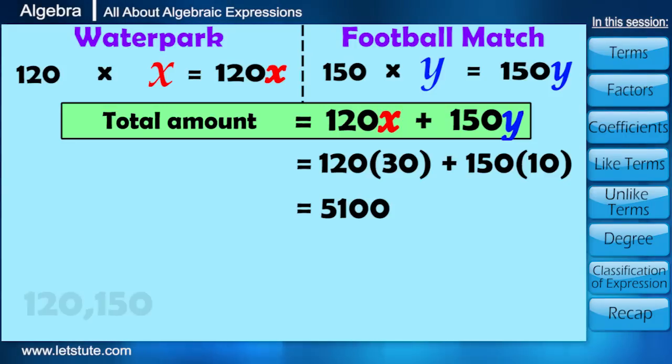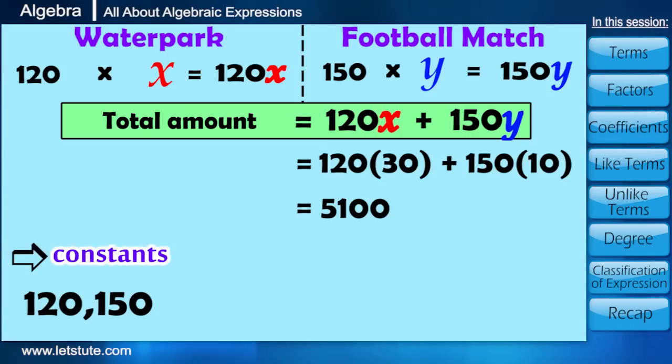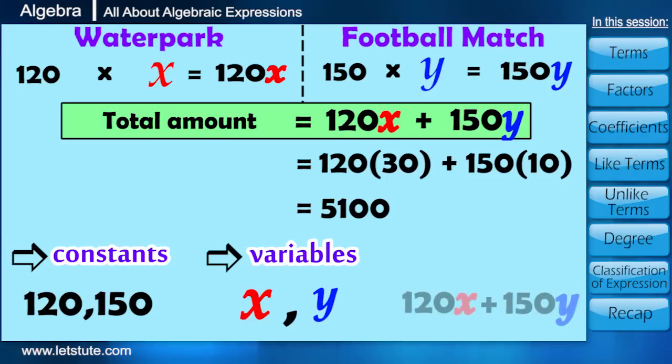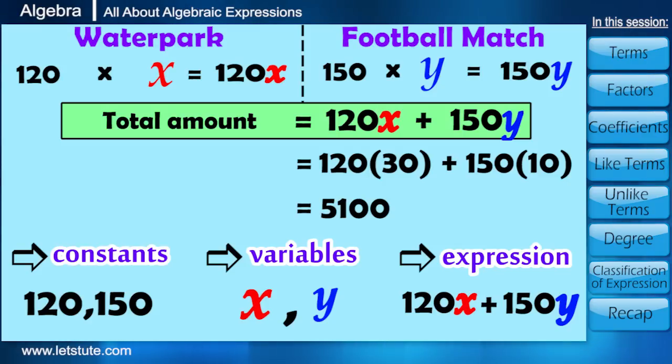Friends, here 120 and 150 are called constants. X and Y are called variables, and when they combined with the fundamental operations, forms algebraic expression. Let's proceed further to learn few more things about algebraic expressions.